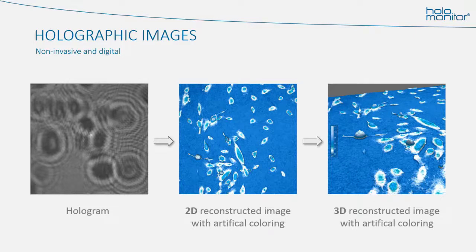This pattern — this hologram — is the raw data, which is used to calculate the phase shift. That, in turn, is used to calculate the thickness of the cell in every pixel in the image. Then the software creates a cell image based on those calculations. As the data contains thickness values, the image can be presented in both 2D and in 3D.